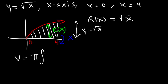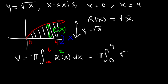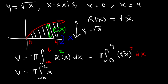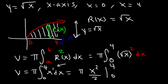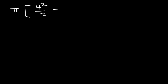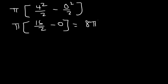Using the disk method formula, the volume equals pi times the integral from 0 to 4 of r(x) squared dx. Since r(x) equals root x, we square it to get x. So the volume is pi times the integral from 0 to 4 of x dx. The antiderivative of x is x squared over 2. Evaluating from 0 to 4: 4 squared over 2 minus 0 squared over 2 gives 16 over 2 minus 0, which equals 8. So the final answer is 8 pi.